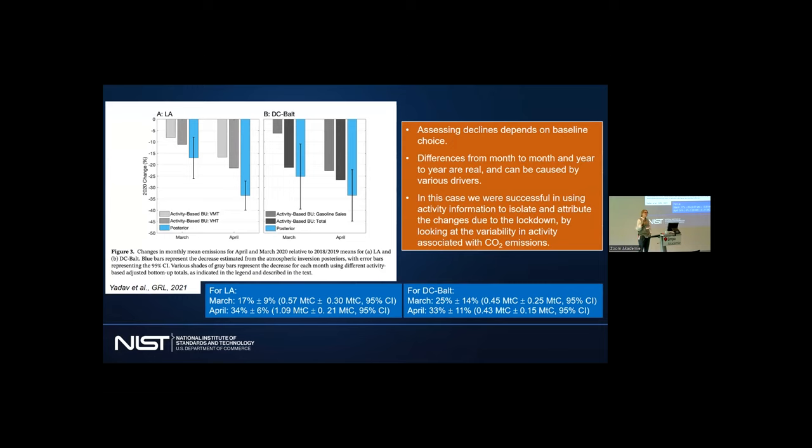First, when doing COVID analysis, you really need to think about your baseline choice. It's very tempting to use January 2020 as your baseline, but that's not what you should be using. You should be using a baseline that had to do with the same month at a different year. Especially when doing relative reductions, it's very important to think about your baseline. We saw differences from month to month and year to year that were real, caused by various drivers.